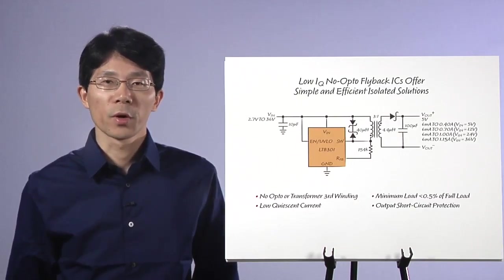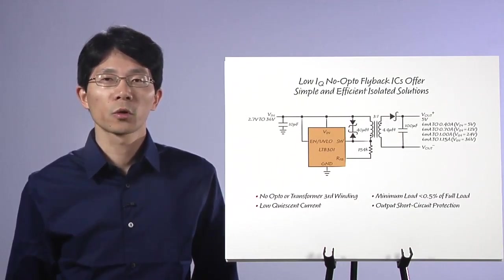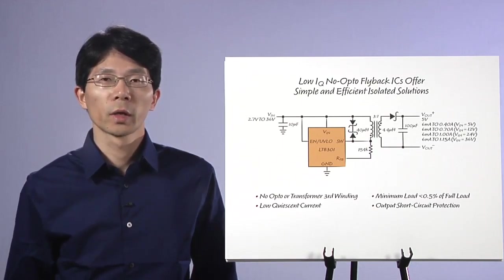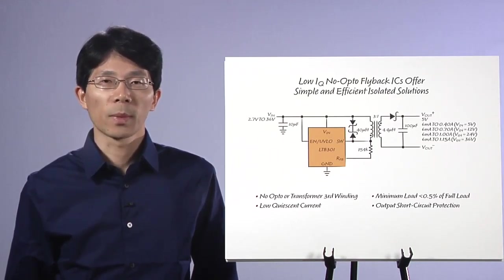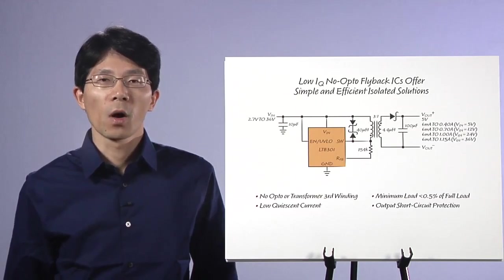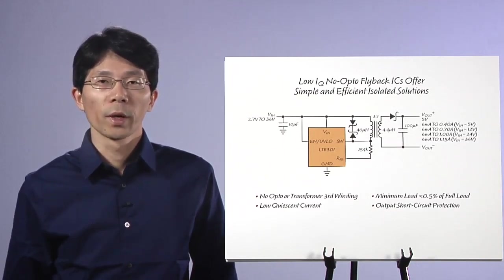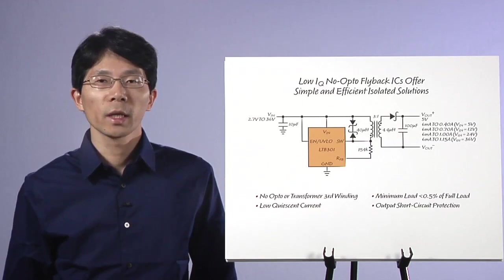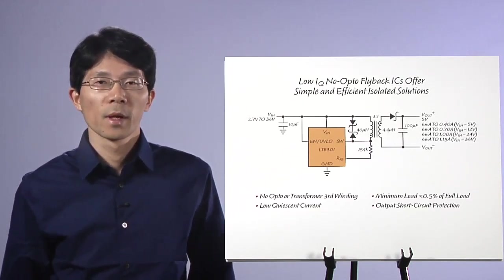The flyback converter is typically the first choice for engineers looking for isolated power supplies below 50 watts. These isolated power supplies generally require opto-isolators or extra transformer windings to regulate the output voltage. As a result, these isolated power supply solutions are generally complicated, bulky, and inefficient.